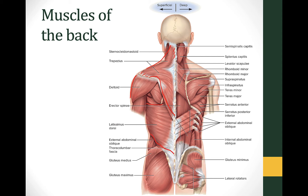We also have the lats, or latissimus dorsi — a large flat muscle originating on the vertebrae and inserting all the way up on the humerus. The lats adduct the arm, pulling it in towards the body. On the deeper right side, underneath the trapezius, we have the rhomboids: rhomboid major and rhomboid minor. They function to retract the scapula, pulling it in towards the vertebrae where they originate, then inserting on the scapula.